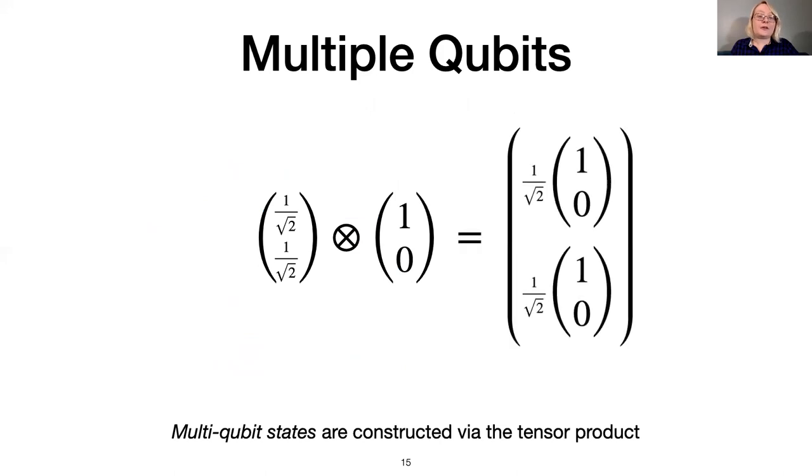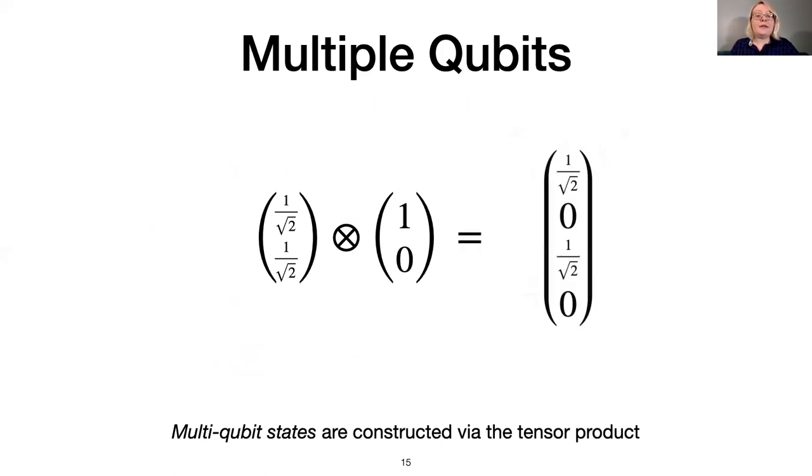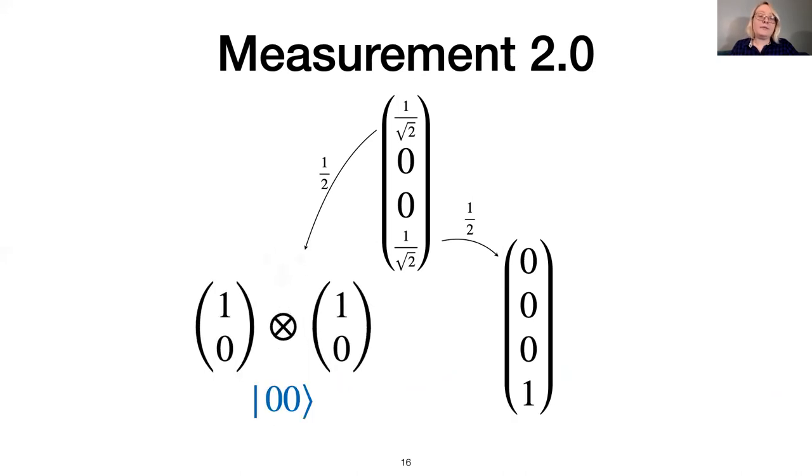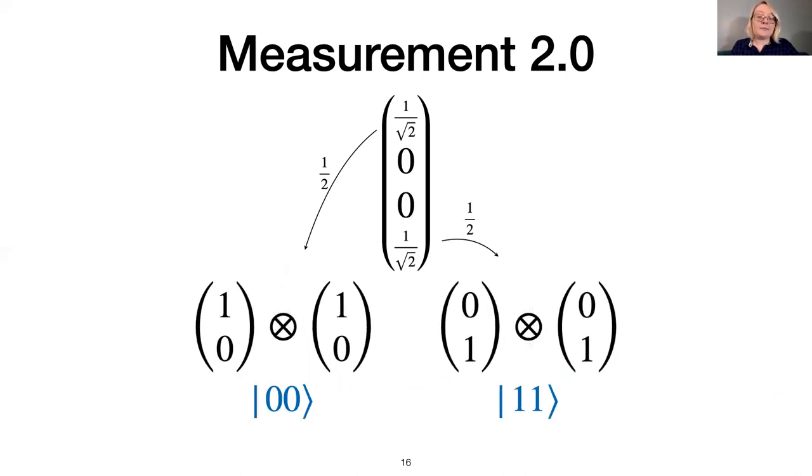Multi-qubit states are constructed via the tensor product. This slide shows the product of the plus and zero states. As with measuring a single qubit, the probability of an outcome when measuring multiple qubits depends on the corresponding entry in the vector state. In this case, the result of measurement is the 0,0 state with probability one-half and the 1,0 state with probability one-half.